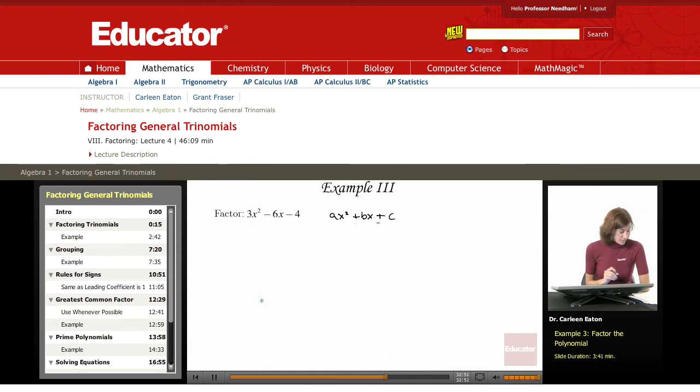Here we have negative signs, which we will take into account. So my a equals 3, b equals negative 6, and c equals negative 4. And I always check,